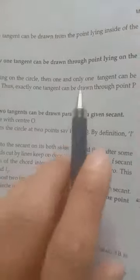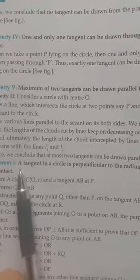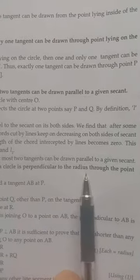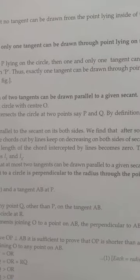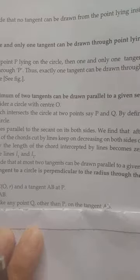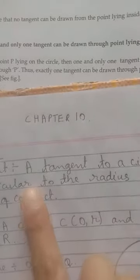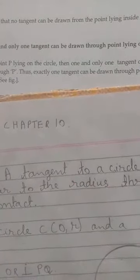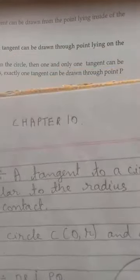To summarize: if the point is lying on the circle we can draw one and only one tangent; if it is outside the circle we can draw maximum two tangents. Now let's come to a theorem about a tangent and a radius. We will see that they are perpendicular, meaning they touch each other at an angle of 90 degrees.